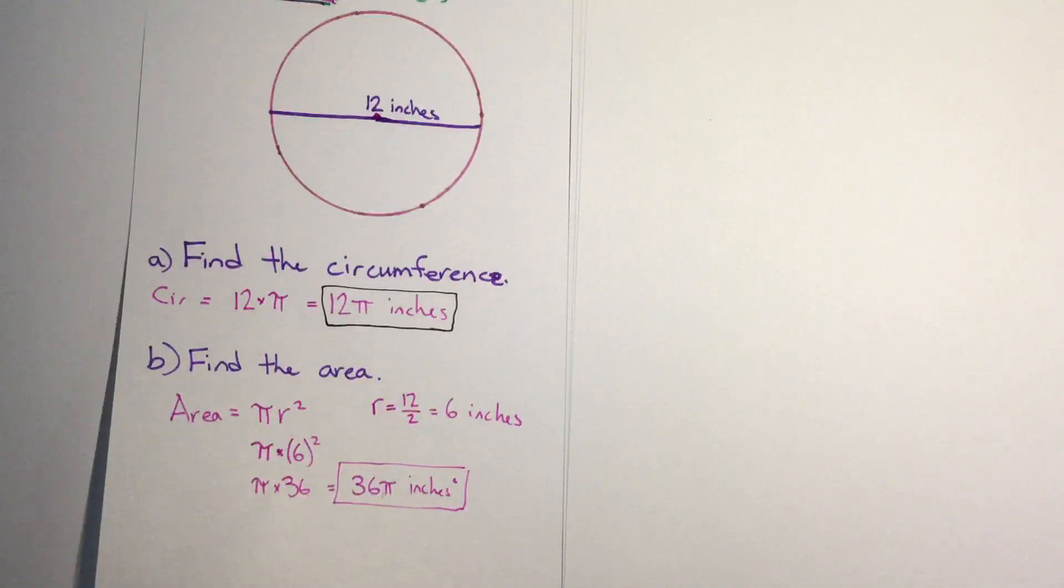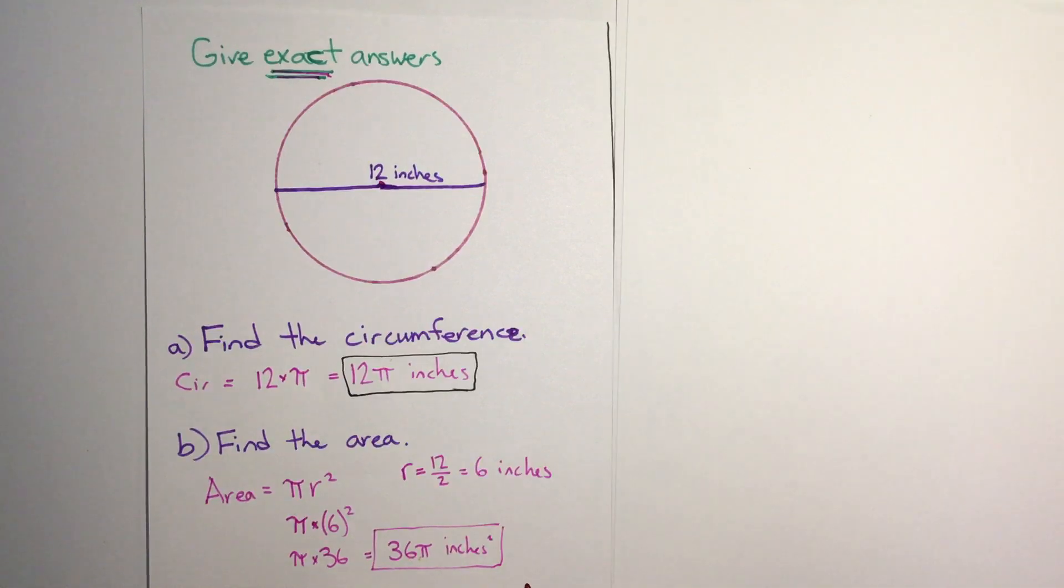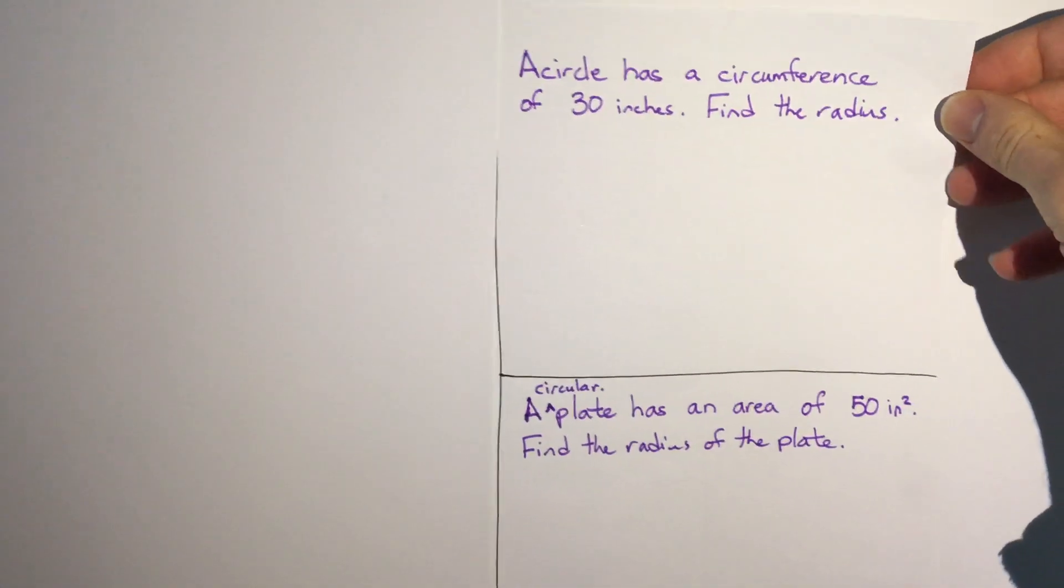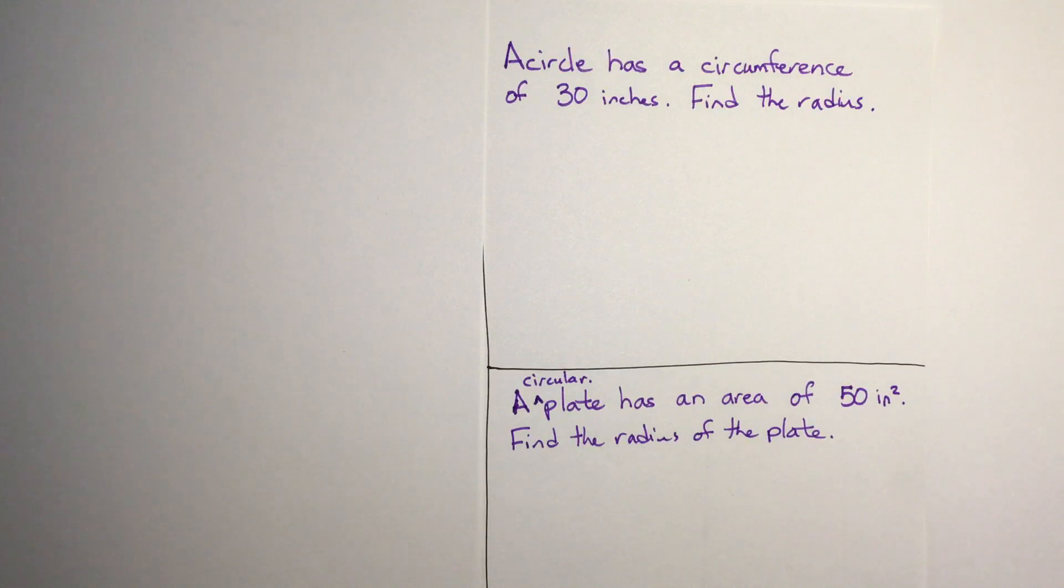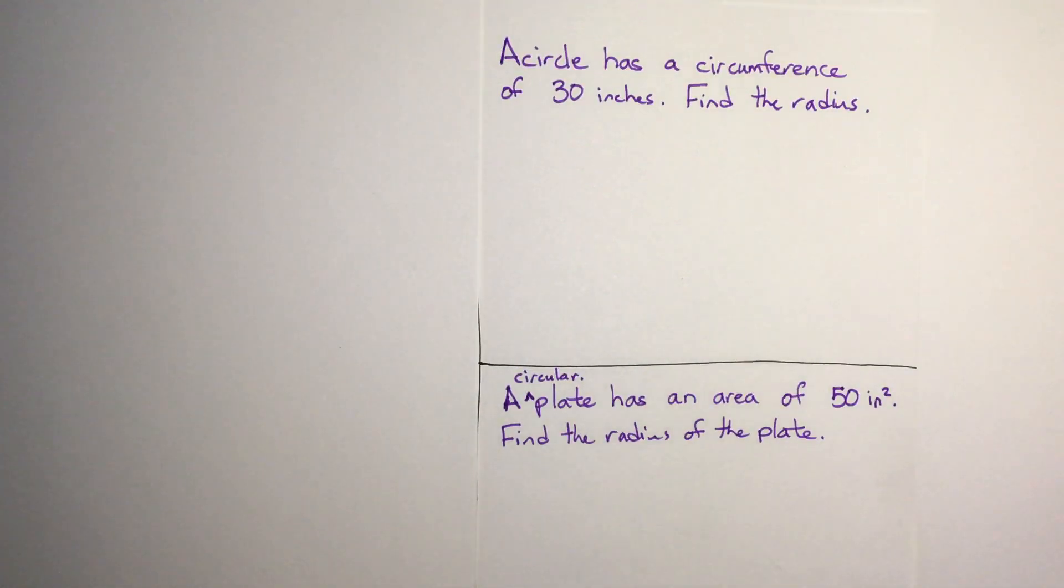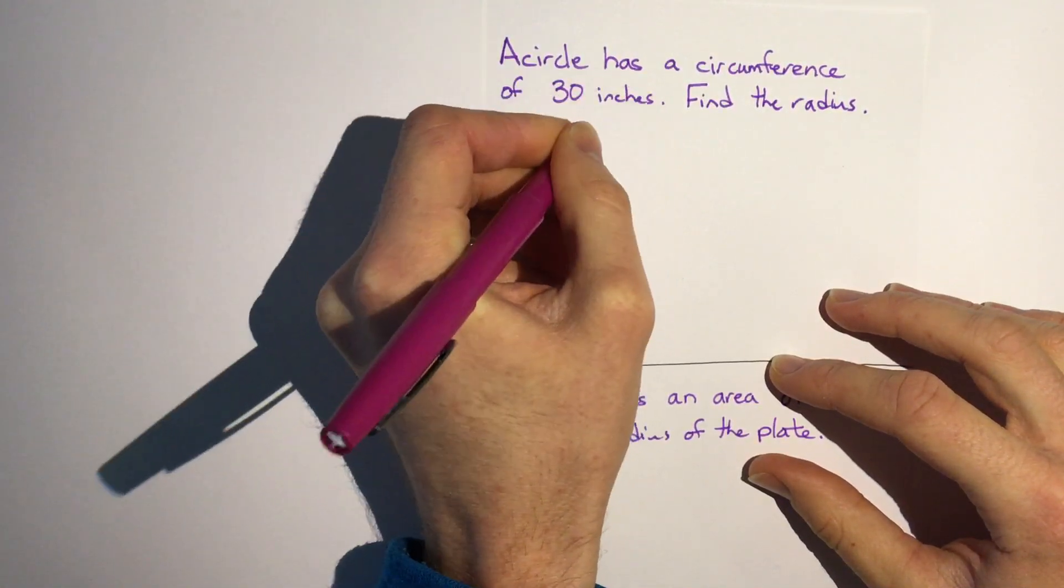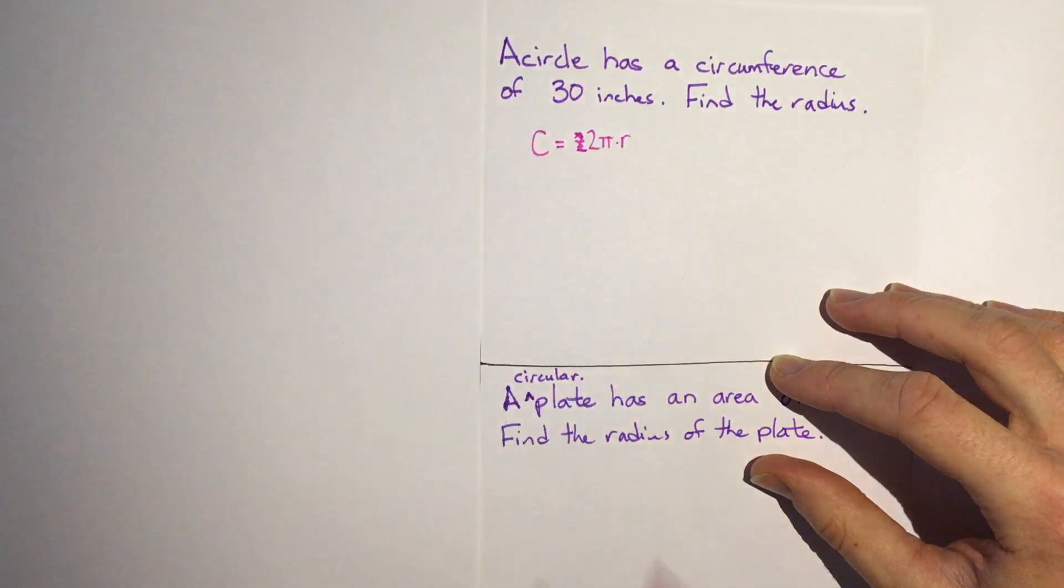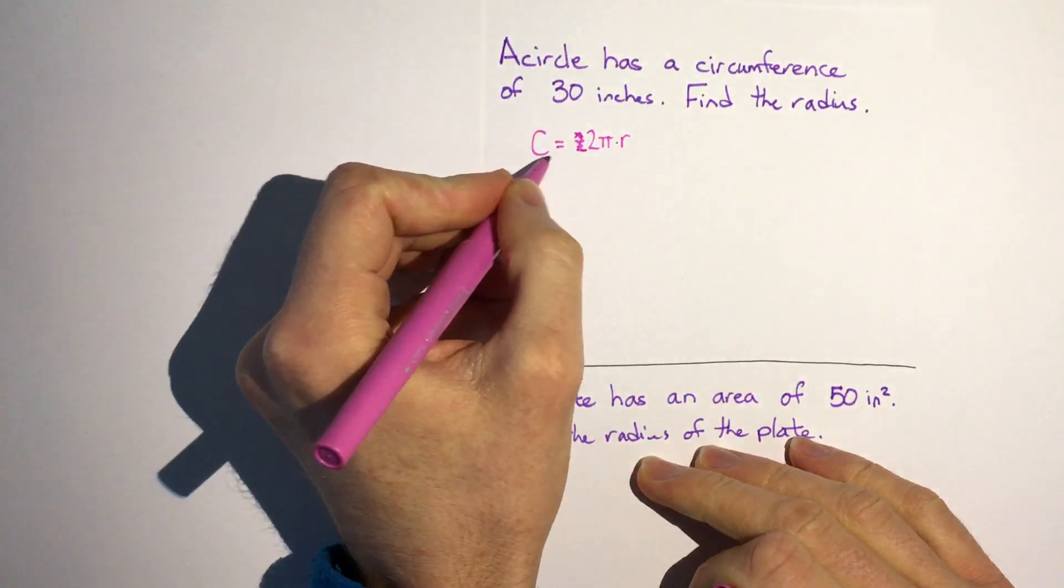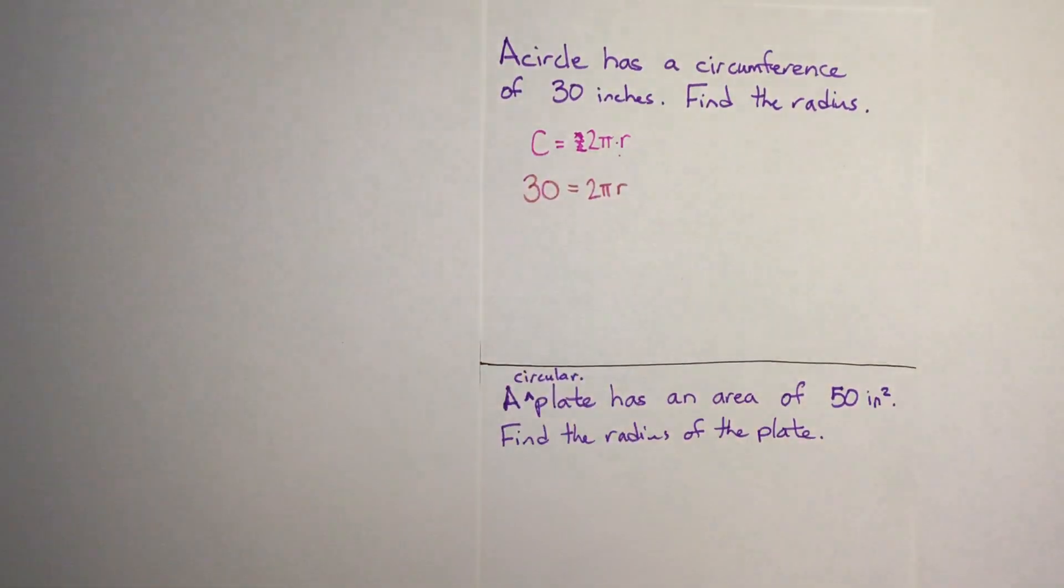So this is what we can do if we have the radius or diameter, but what if it's the other way around? What if we're given the circumference and don't have the radius, or we have the area and don't have the radius? We can look at this first one that says a circle has a circumference of 30 inches, and then it asks us to find the radius. Well we know that circumference equals 2πr. So we can use this formula to help us. We're going to plug 30 in, not to r but to c, so our circumference is 30 and we know that equals 2π times the radius.